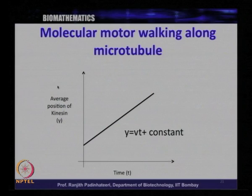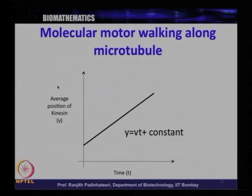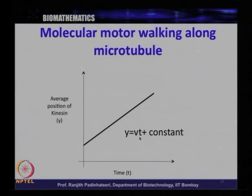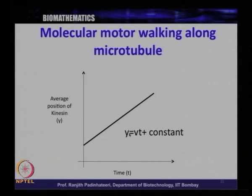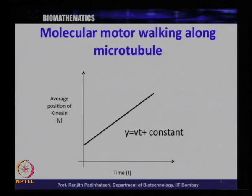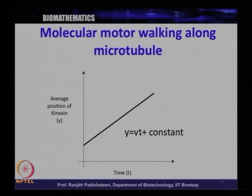Let us relook at a couple of examples. We already saw kinesin position versus time — this is like a straight line. The position y is equal to velocity times time t plus some constant: y = vt. So the position is a function of time. What does it mean? As the time varies, the position also varies — the average position y increases with time. The more the t, the more the y.